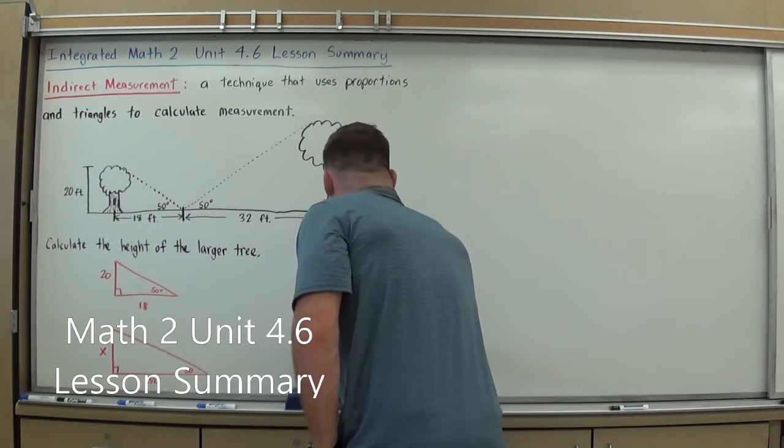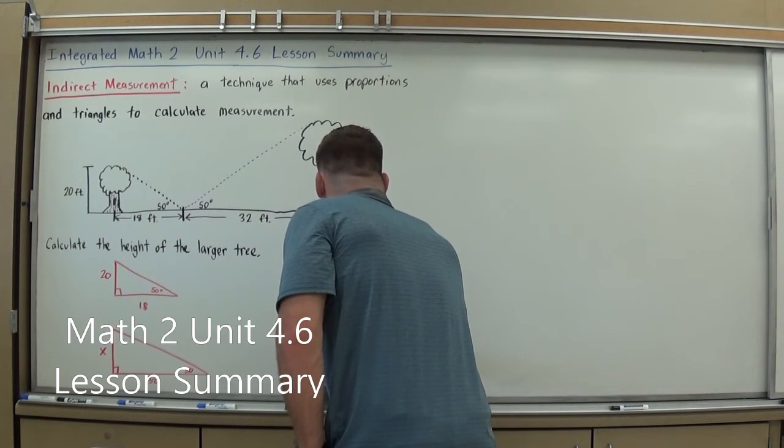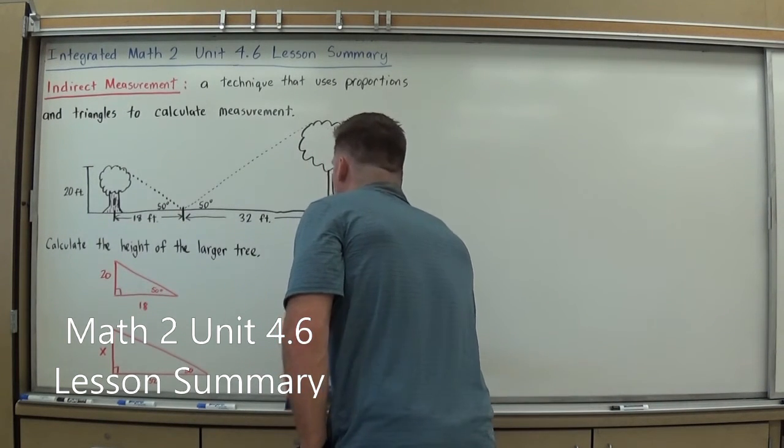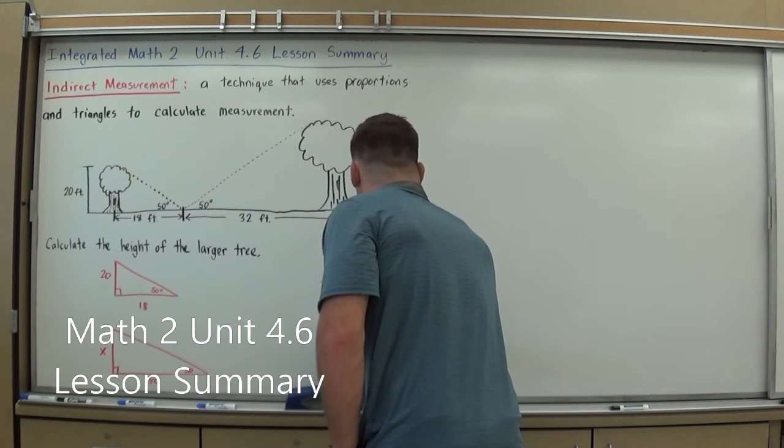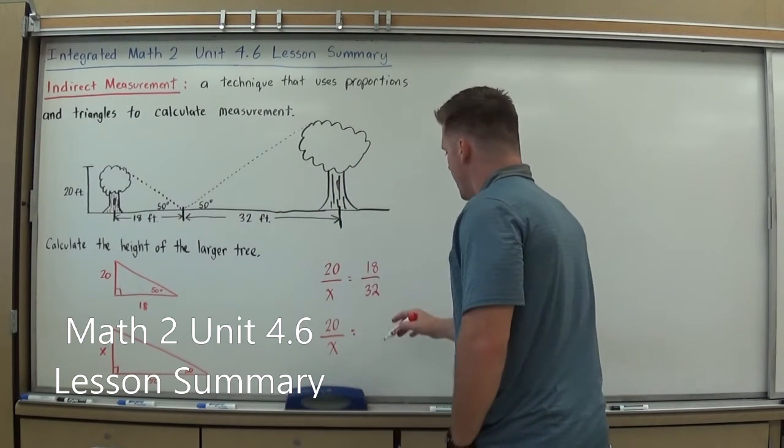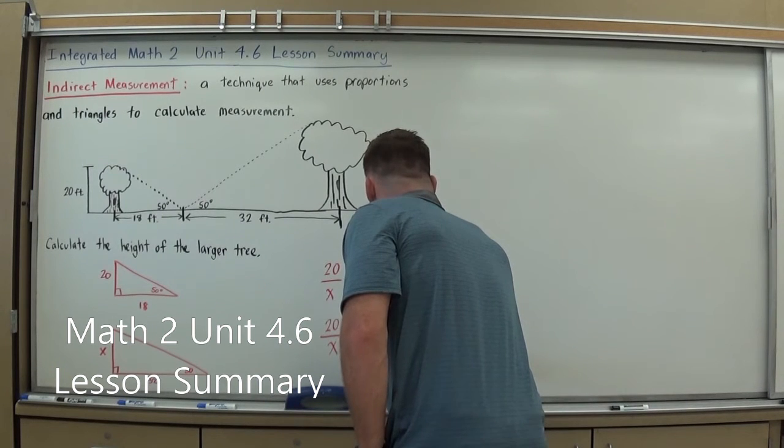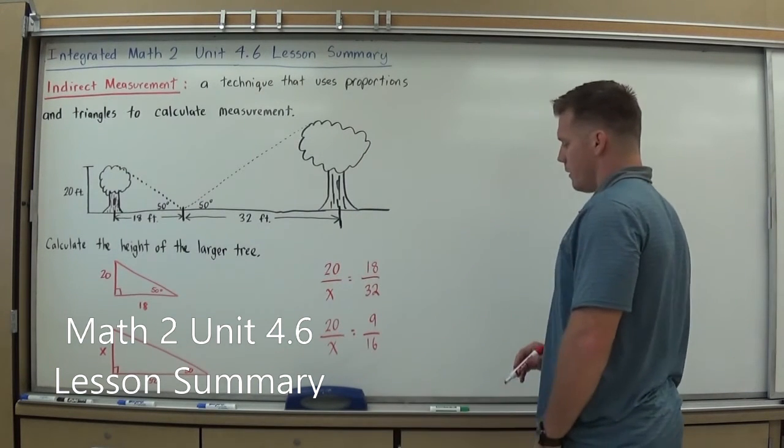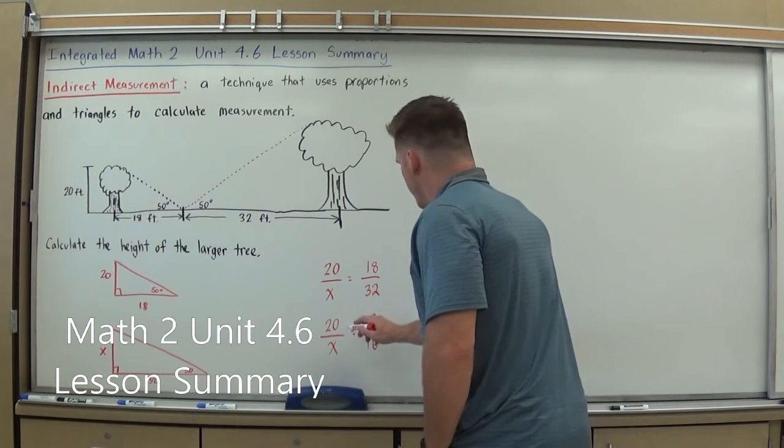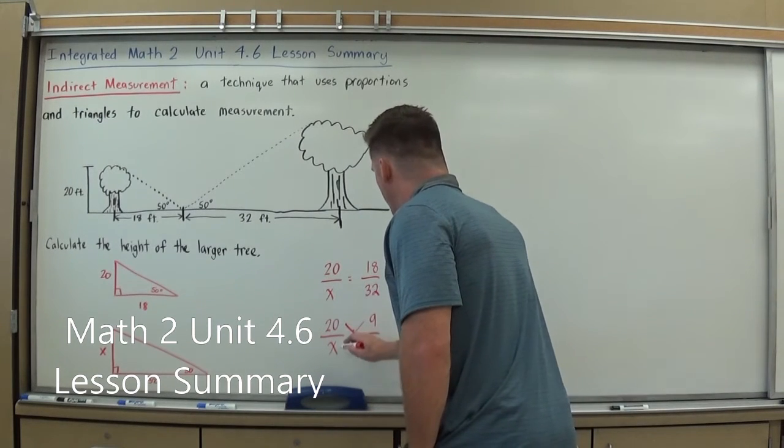Before I do so though, I am going to try to simplify this some. So I'm going to go 20 over X equals, and I can make that, divide both of those by 2, and go 9 over 16. Now I have some smaller numbers to work with, and I can go ahead and cross-multiply.